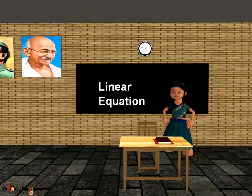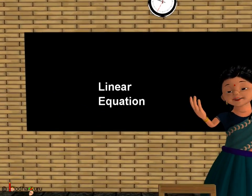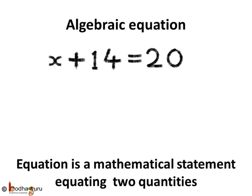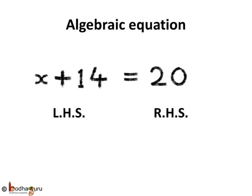Good morning children! Today we shall learn about linear equations, but first let us revise what an algebraic equation is. You already know x plus 14 equal to 20 is an algebraic equation. An equation is a mathematical statement which equates two quantities — it shows the equality between two quantities.